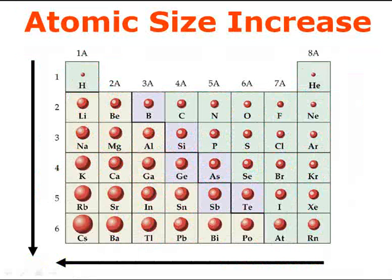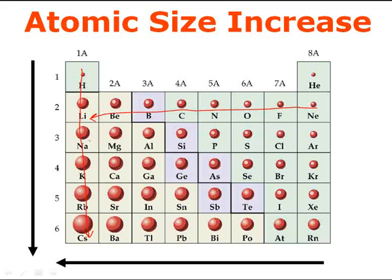This is a similar periodic table, except the transition metals in the middle have been removed. The point is to follow the arrows on screen. My electron cloud is getting bigger as I go down the periodic table, and it's also getting bigger as I go from right to left. The next several slides will focus on what causes the size increase going down and what causes the size increase going from right to left.